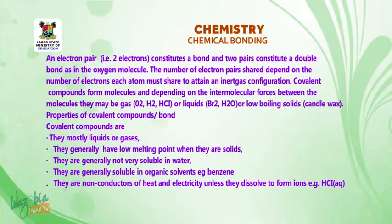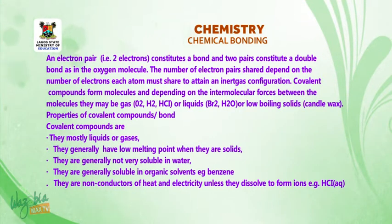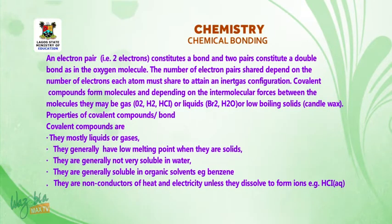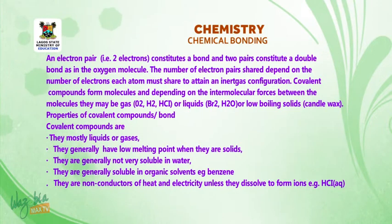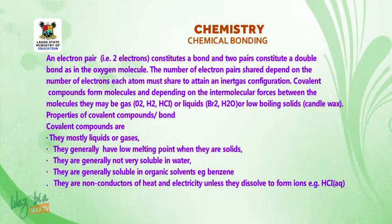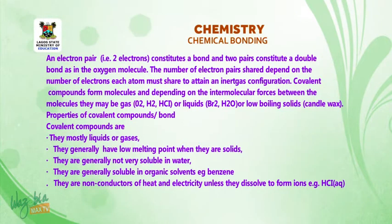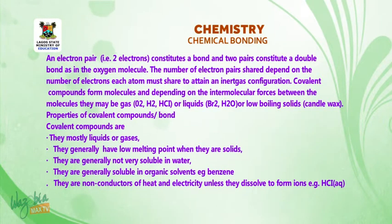An electron pair — that is, two electrons — constitutes a single bond, and two pairs constitute a double bond, as in an oxygen molecule. The number of electron pairs shared depends on the number of electrons each atom must share to attain an inert gas configuration. Covalent compounds form molecules, and depending on the intermolecular forces between the molecules, they may be gases such as oxygen, hydrogen, or hydrogen chloride, or liquids such as bromine or water, or low boiling solids such as candle wax.